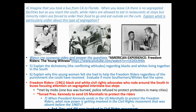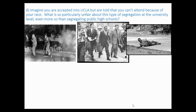The answer is the federal government. Eisenhower was the first US president to allow the federal government to get involved when he sent the 101st Airborne in to protect the Little Rock Nine and allow them to go to school. But JFK is going to become the first president to get more regularly involved in the civil rights movement. Here's another question: imagine you're accepted into UCLA but told you can't attend because of your race. What is so particularly unfair about this type of segregation at the university level, even more so than segregating public high schools? Stop the video and think about that.